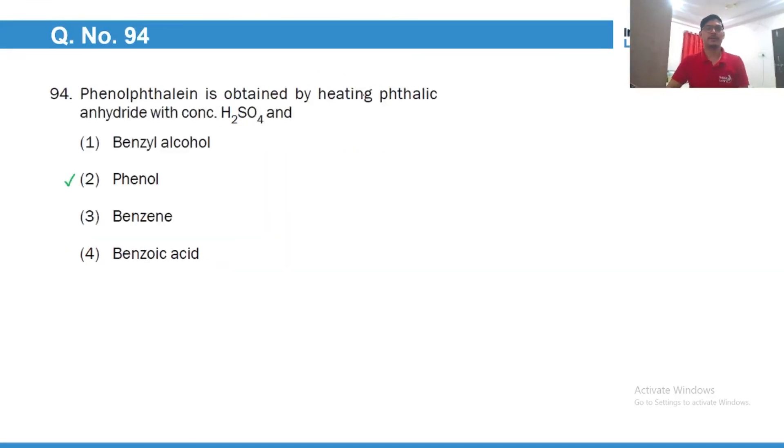Phenolphthalein is obtained by heating phthalic acid, phthalic anhydride with concentrated H2SO4 and phenol. So it occurs somewhat like this. So you just have to remove this water and join these two carbon atoms with this carbon. So that will give you phenolphthalein. So this is the correct answer.